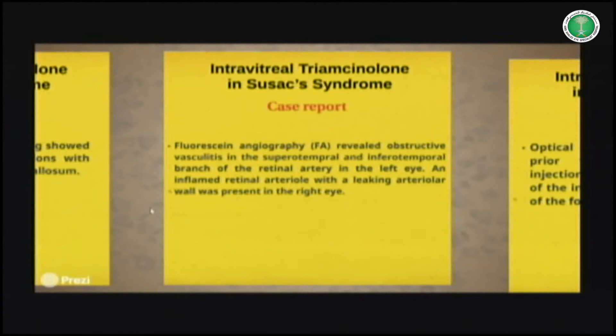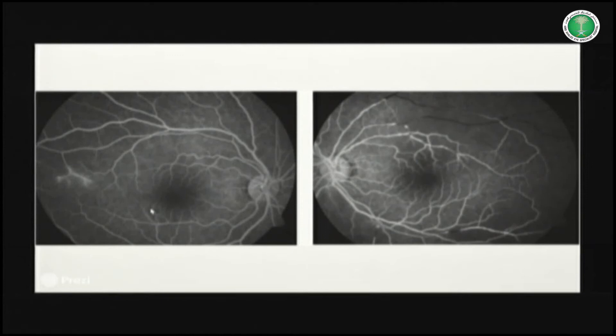The fluorescein angiography reveals a very important ischemic process, as you can see here. It's very important to mention that the ischemic process occurs at the artery, and the vein, as Dr. Ahmed mentioned during the last conference. You can see an important ischemic process, and in the right eye some inflammation located at the artery.